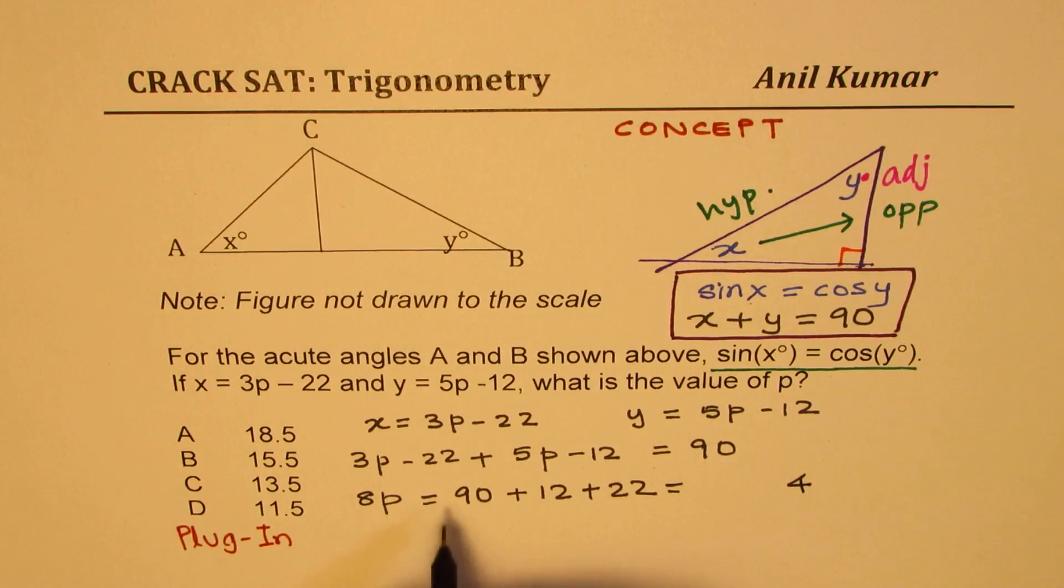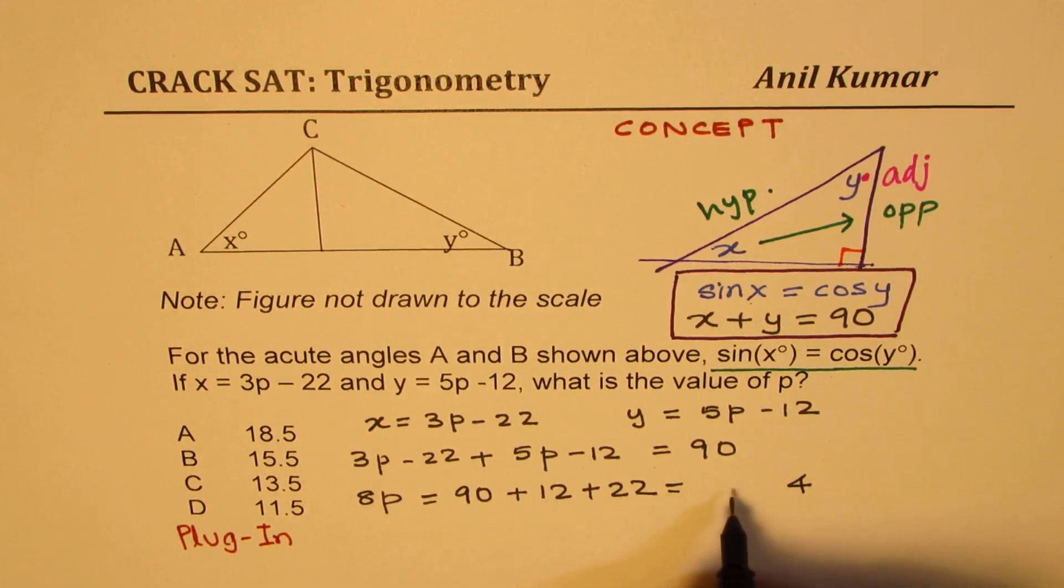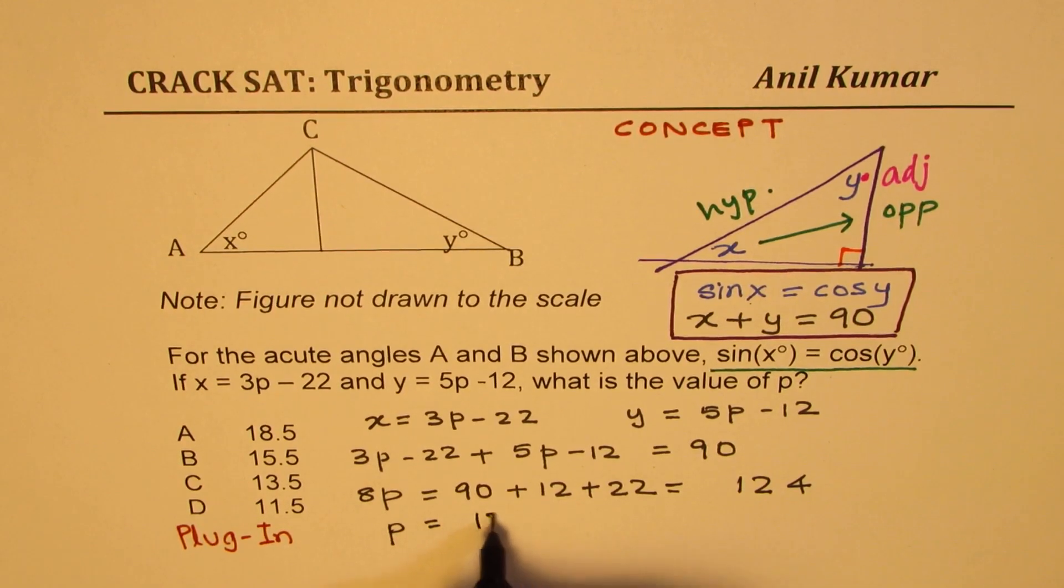So if you get this question as question number 20 without calculator, you could do like this. So you get 2 plus 2, 4. 8p is equal to 90 plus, 9 plus 1, 10 plus 2, 12, 124. So p is equal to 124 divided by 8.